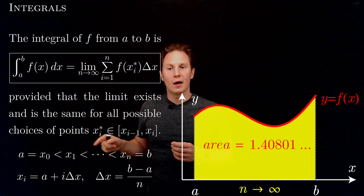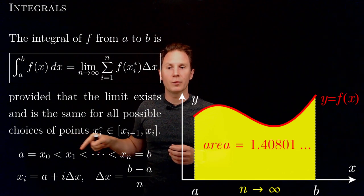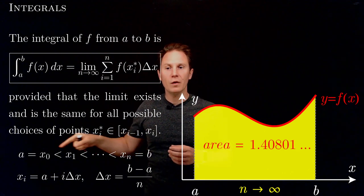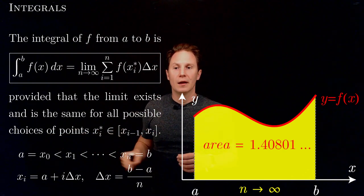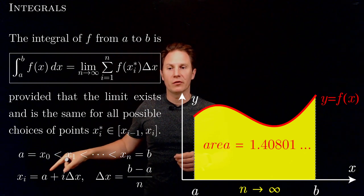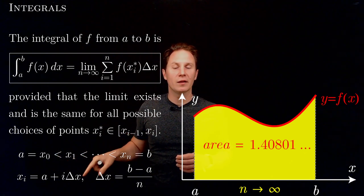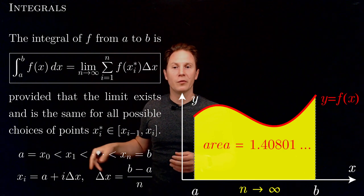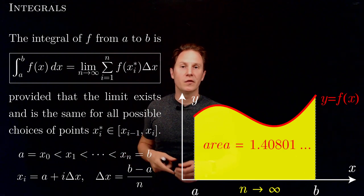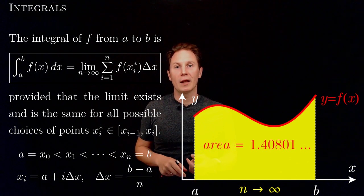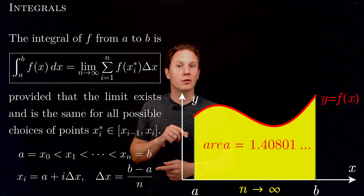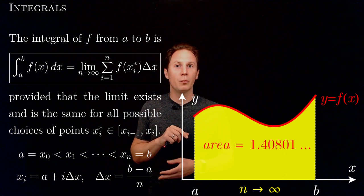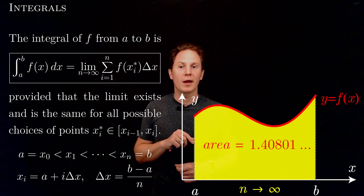The sub-intervals have endpoints xi, with x₀ being a and xₙ being b for all n. xi in general can be expressed as a plus i times delta x, where i changes from 0 to n. Delta x is the width of each sub-interval when we have n of them — that means we take the total length of the interval ab, so that's b minus a, divide it into n equal parts, giving delta x equals (b minus a) over n.